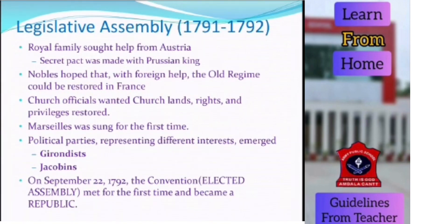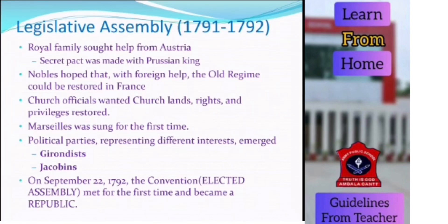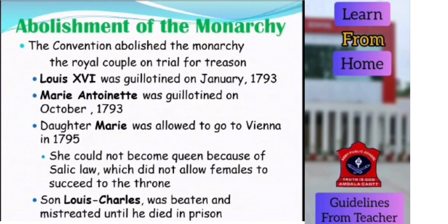In the Legislative Assembly phase, the royal family sought help from Austria and a secret pact was made with the Prussian king. Nobles thought the old regime could be restored in France, and church officials also wanted their positions back — but they could not achieve this. The Marseillaise was sung and the army put them all down. A Convention — an elected assembly — was established, and France became a republic. Political parties, the Girondins and Jacobins, played a major role. The Jacobins became more popular. The monarchy was abolished, King Louis XVI was guillotined, as was Marie Antoinette. Their daughter was allowed to go to Vienna, but their son was beaten in prison until he died.